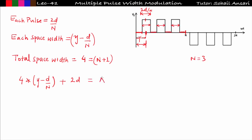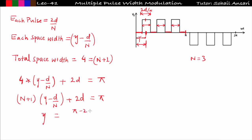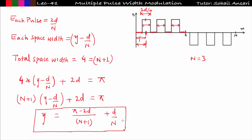Replacing 4 with n+1: (n+1)(gamma − d/n) + 2d = pi. From this we can solve for gamma: gamma = [pi − 2d] / (n+1) + d/n. This is really important. In PS Bimbra they derive the expression for two pulses only and give the formula without derivation. Here n is the number of pulses. In this way we can find the value of gamma.